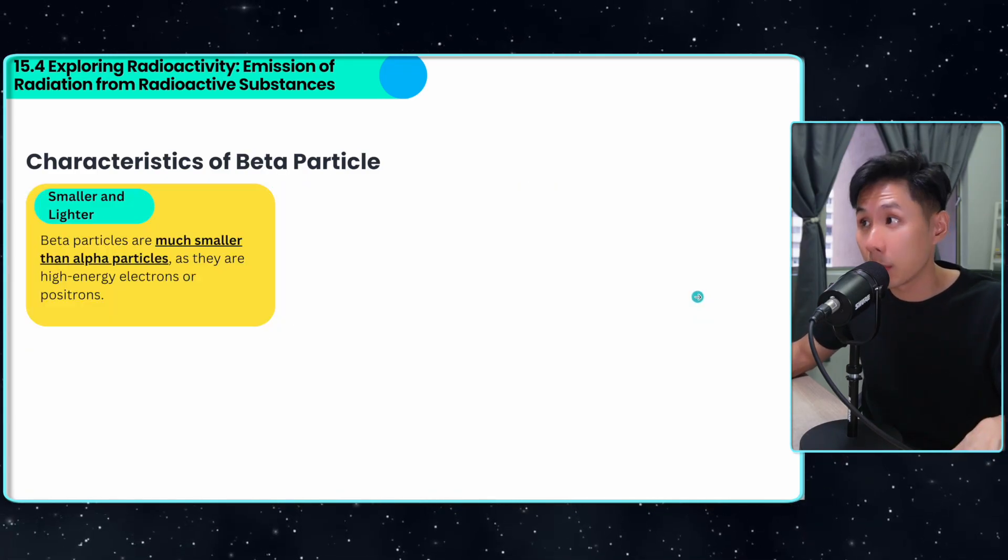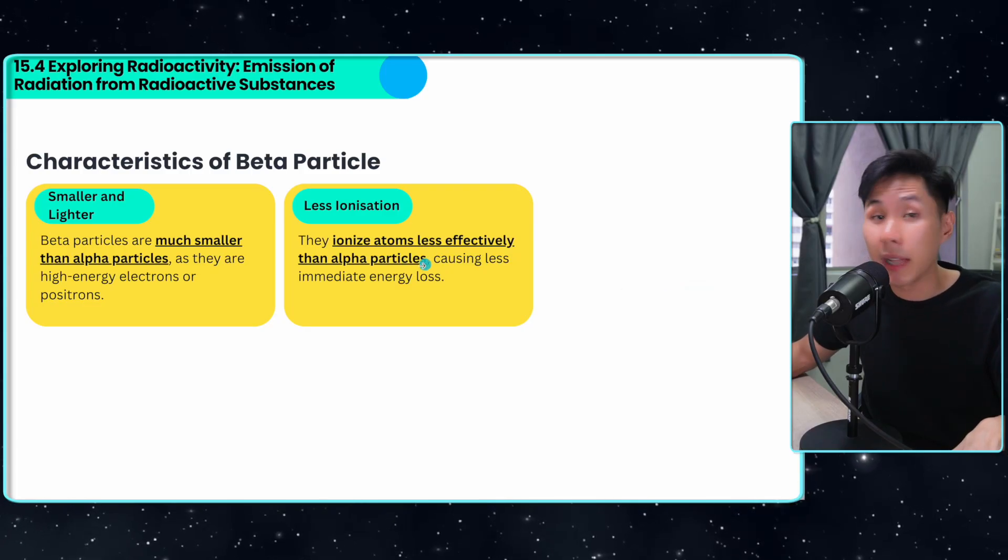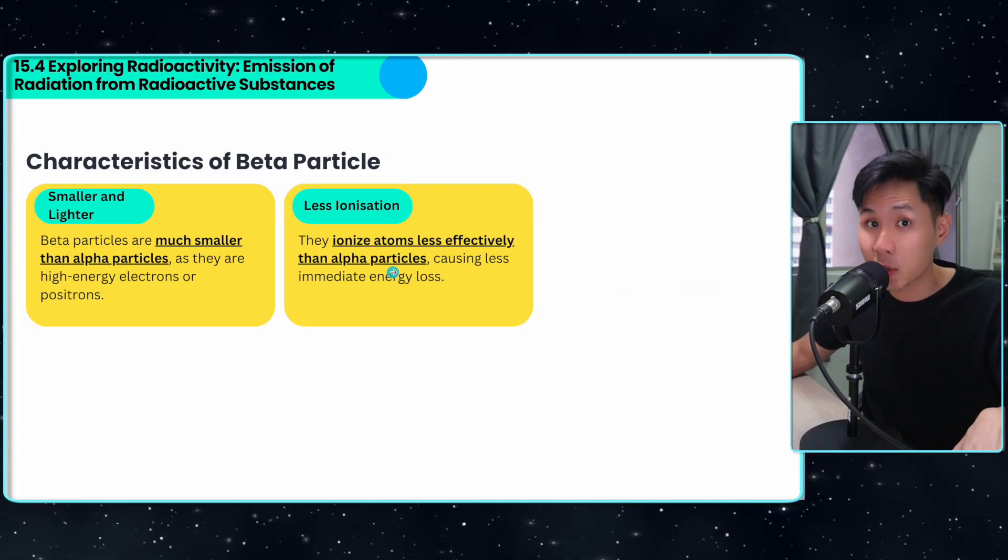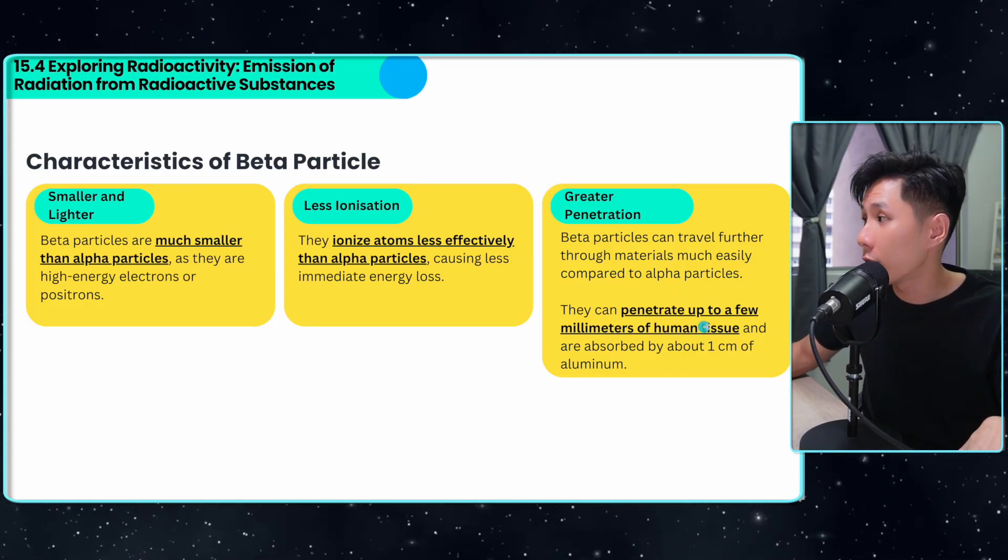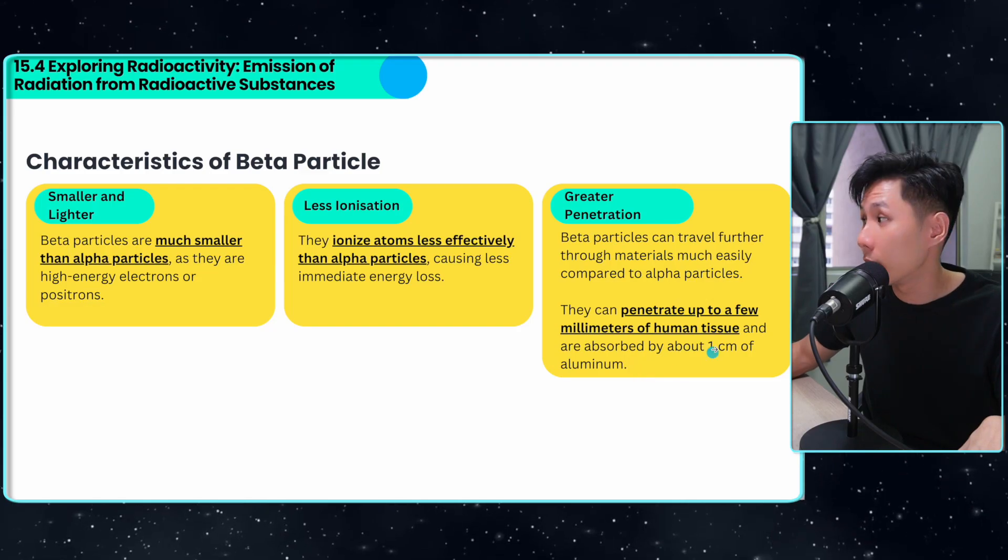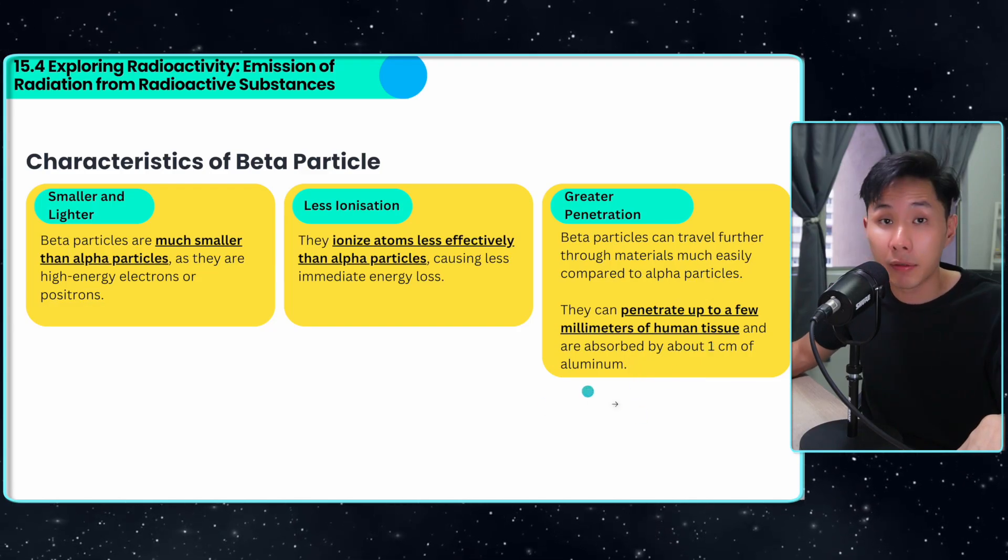For beta particles, they are much smaller, and they ionize atoms less effectively because they have less charge. They travel through material much more easily compared to alpha particles. They can penetrate up to a few millimeters of human tissue and are absorbed by 1 cm of aluminum.